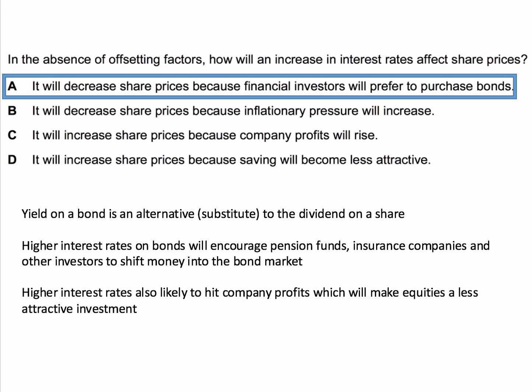The reason is that the yield on a bond — the interest on the bond — is an alternative or substitute to the dividend on a share. If you buy company shares you expect to share the profits as a dividend; if you buy a bond you expect the yield. Higher interest rates on bonds make bonds more attractive, encouraging pension funds and insurance companies to shift some of their portfolio into the bond market, potentially moving money out of equities.